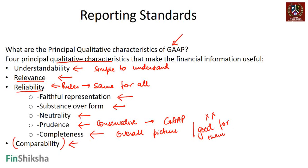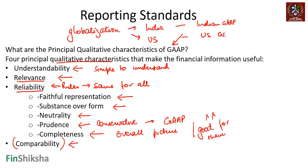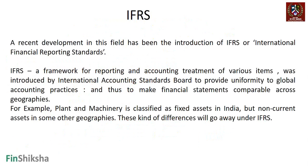However, GAAP doesn't completely solve the problem in today's globalized age. A company might be operating in India but competing with a company in the US. For example, Flipkart and Amazon are competitors — one is an Indian company, one is a US company. How do you compare them if one follows Indian GAAP and the other follows US GAAP? While broadly most principles are similar, they may not be 100% the same, making cross-geography comparison difficult.